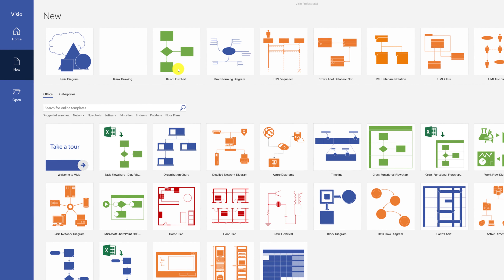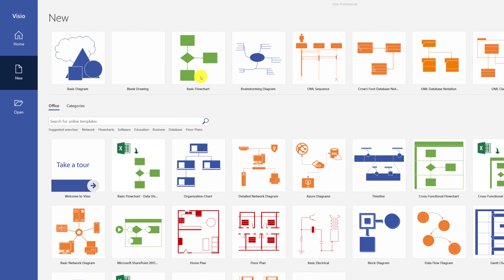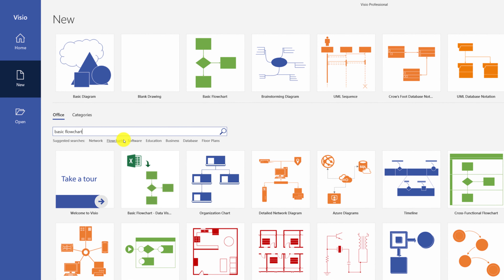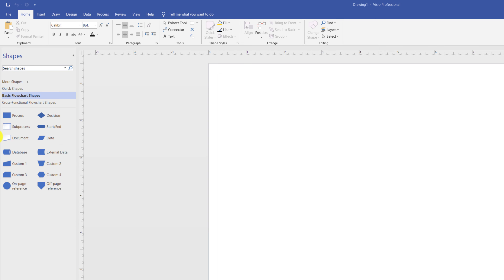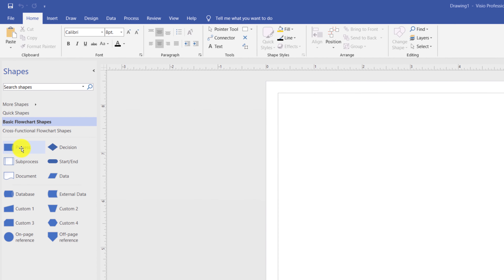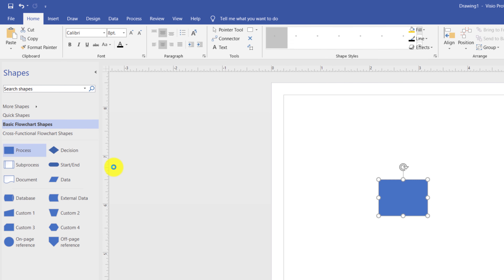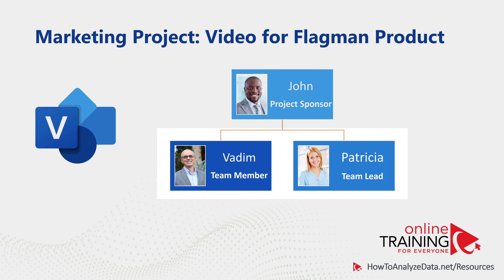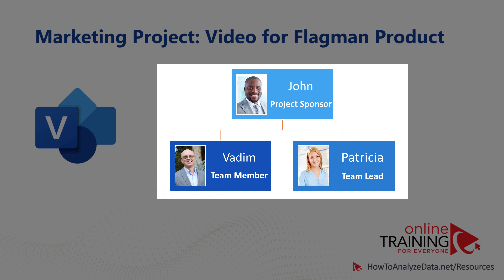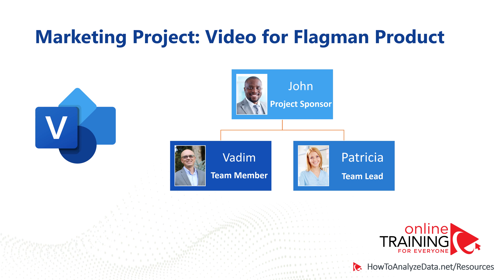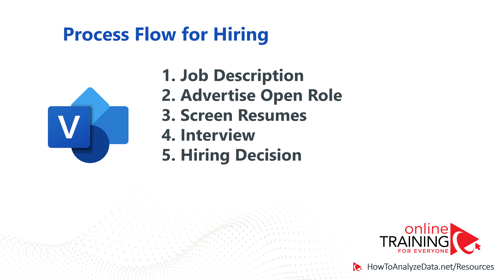I used the basic flowchart template recently so it shows in my recently viewed templates. If you don't see it right away, search for it using the search bar. To start creating the diagram, drag shapes in and begin connecting them. In our scenario, I'm working with Patricia on a marketing project, and we both report to John, who suggested adding a team member due to heavy workload.